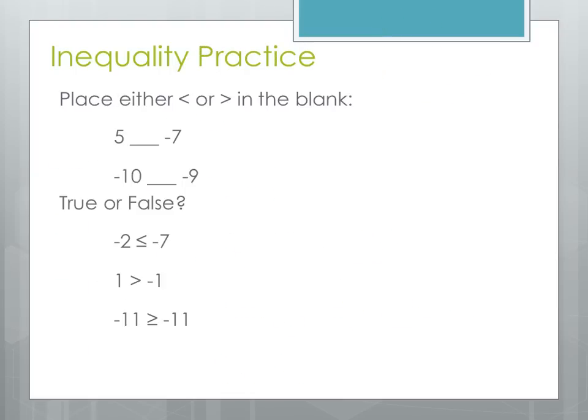Let's do some practice. For these first two problems, we're going to place the proper inequality in the blank between two numbers. We're comparing 5 and negative 7. Using the alligator trick, we want to open toward the bigger number, so we open toward the 5 and point toward the 7, because 5 is greater than negative 7.